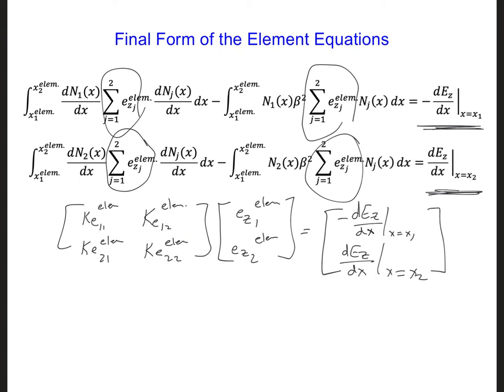Now comparing this matrix equation here with the two equations we have at the top of this screen, we can define the coefficients keij for each element is equal to x1 element to x2 element.